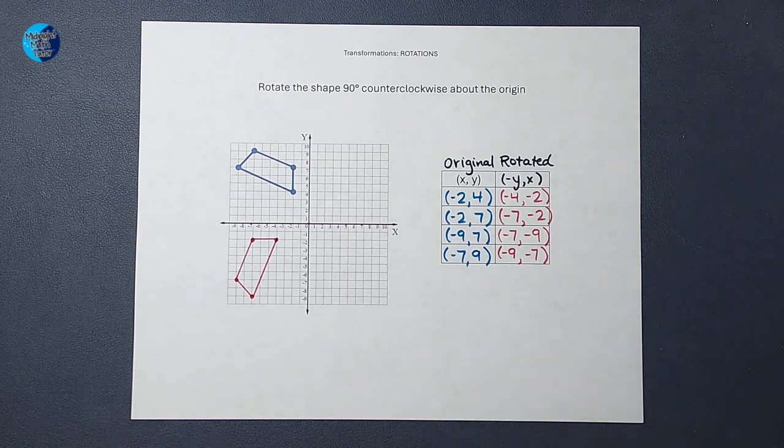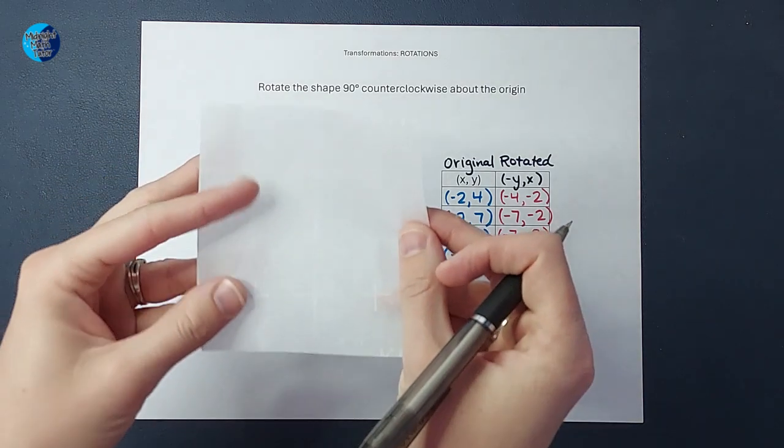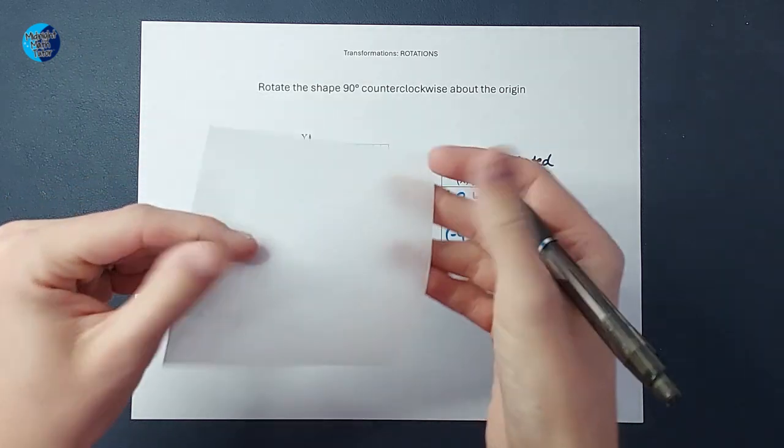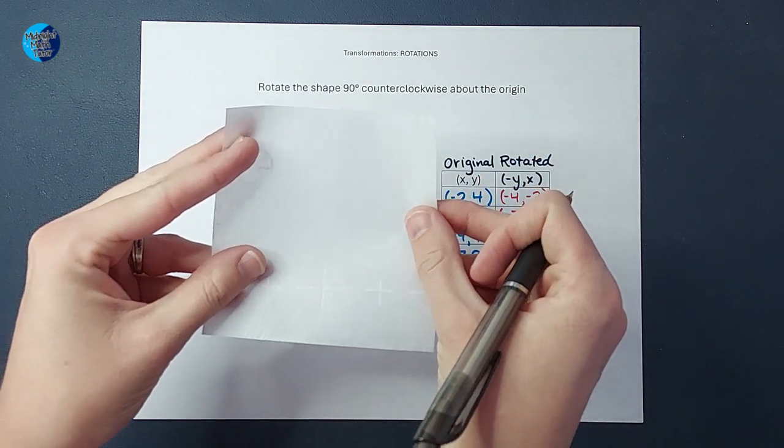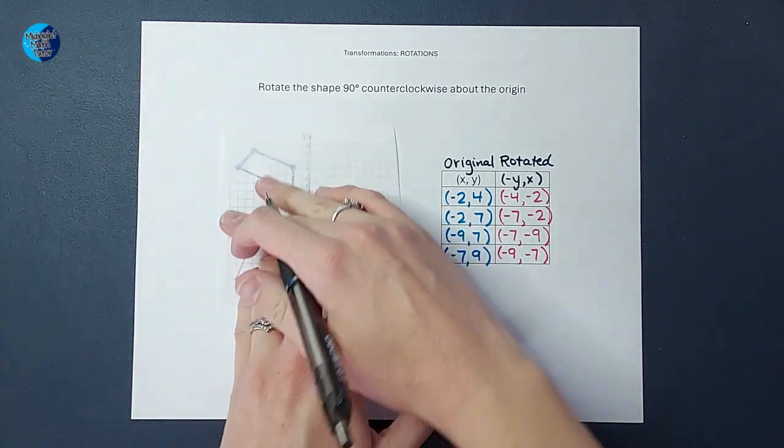But there is a way that we can check if you want to. So I'm just going to take this parchment paper. This is literally paper I took from my kitchen that you can put on a cookie sheet when you're making cookies, right?